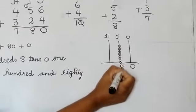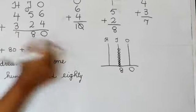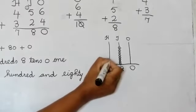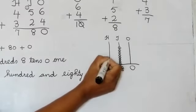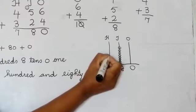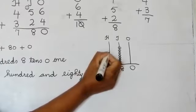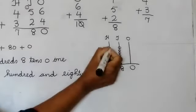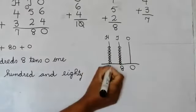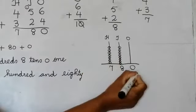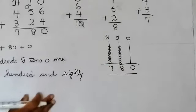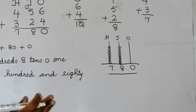So we will put 8 here. Under hundreds the number is 7. So we will put 7. Do you understand till here everybody?